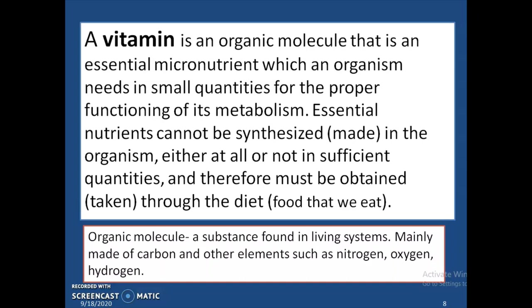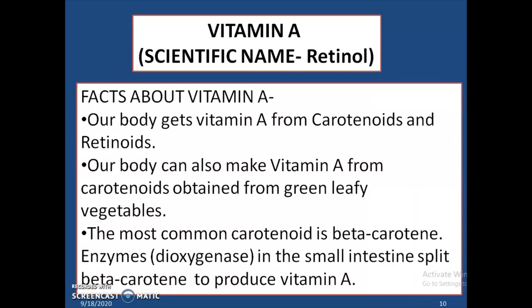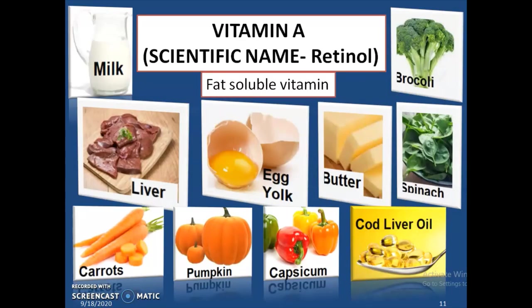Vitamin A is also known as retinol. Our body gets vitamin A from carotenoids and retinoids. Our body can also make vitamin A from carotenoids, often from green leafy vegetables. The most common carotenoid is beta-carotene, and enzymes such as dioxygenase in the small intestine split beta-carotene to produce vitamin A.